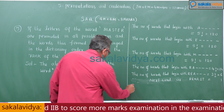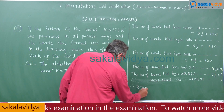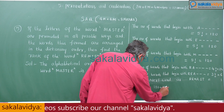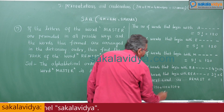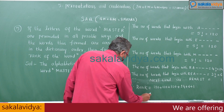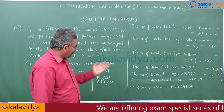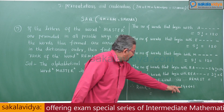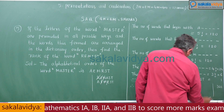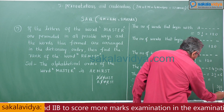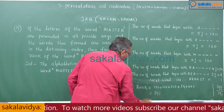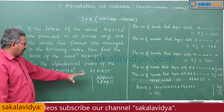Therefore, the rank is equal to 120 + 120 + 120 + 24 + 6 + 1. That gives 240 + 120 = 360, plus 31 = 391. Hence the rank of the word REMASTER is 391.